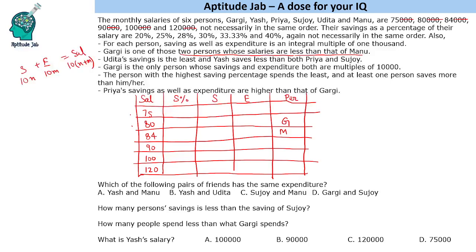Testing percentages on 80k: 20% is 16,000 (not a multiple of 10,000), 25% gives 20,000 (multiple of 10,000), 28% gives 22,400 (no), 30% gives 24,000 (no), 33.33% and 40% also don't work cleanly. So 25% is the only valid option. Gargi's saving is 20,000 and expenditure is 60,000. We can now eliminate these combinations from remaining possibilities.